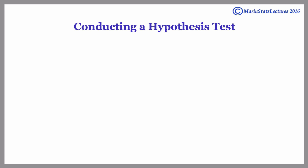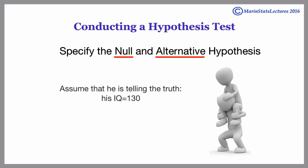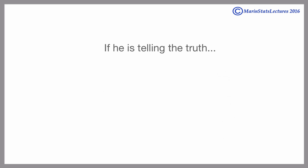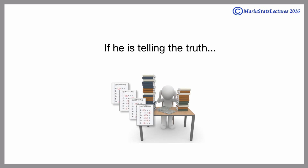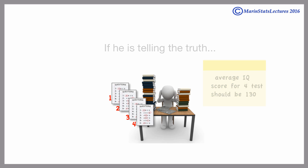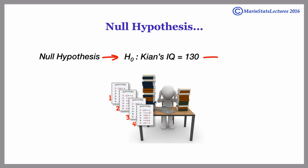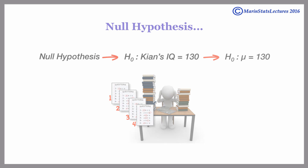When conducting a hypothesis test, we begin by specifying a null and an alternative hypothesis. Since Kyan is our friend, let's start by assuming that he is telling the truth. If he is telling the truth, we'd expect his average IQ score over the four tests to come out to be 130. We call this the null hypothesis. We will assume that Kyan's IQ really is 130 until convinced otherwise.